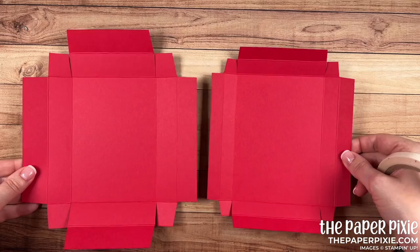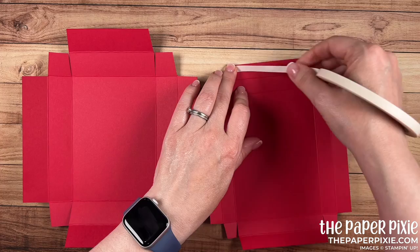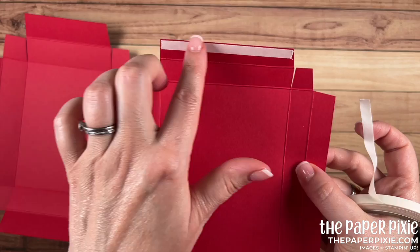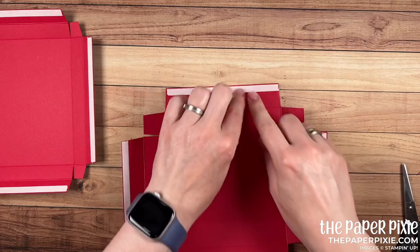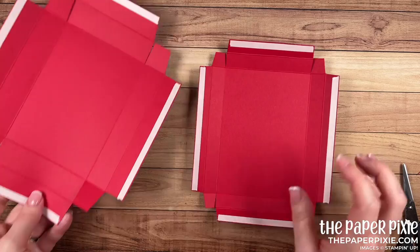All right bringing back the box lid and the box base the next thing we're going to do is take tear and tape and I'm going to run that right up along the edge of all four sides of both of these pieces. Like so we're just going to run that along the top edge of all of these outside pieces.